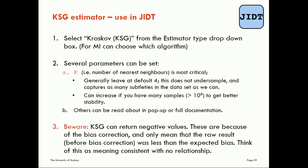Let's have a look at using the estimator in JADT — it's very easy. We're going to look at the auto-analyzer first. We just select the KSG estimator and can choose which algorithm. There are several parameters we can set, including the number of nearest neighbors K, which is the most crucial one. I generally advise leaving that at the default of four to avoid under-sampling. You can increase K if you have lots of samples — with millions of samples I would suggest increasing it to get better stability in results.